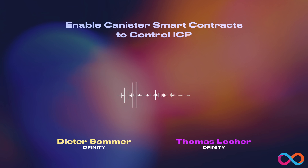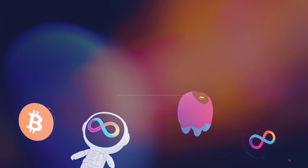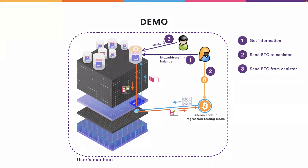Hi, I'm Thomas Locker, researcher at the DFINITY Foundation working on the Bitcoin integration project. I'm going to show you a demo of the developer preview. The goal of the demo is to showcase the main functionality of the Bitcoin developer preview and by extension the Bitcoin integration project. The demo will consist of three parts: first, getting Bitcoin-specific information from a canister such as its Bitcoin address and balance; then sending Bitcoin to a canister to increase its balance; and finally transferring Bitcoin from a canister out to any address of our choosing. So without further ado, let's jump straight to the demo.